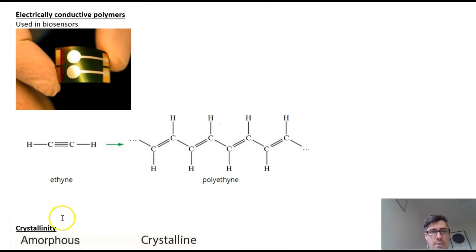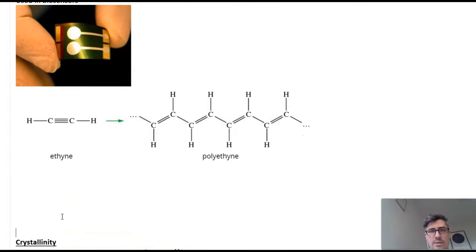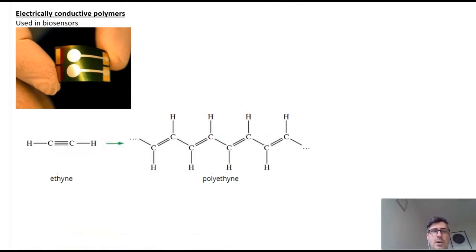If we look at this polymer here, we've got an electrically conductive polymer. So this was actually discovered by a team, international team of scientists, and won a Nobel Prize, one of which was from New Zealand. And they got ethyne, which is also known as acetylene, and they polymerized it to make polyethyne, or sometimes it's known as polyacetylene.